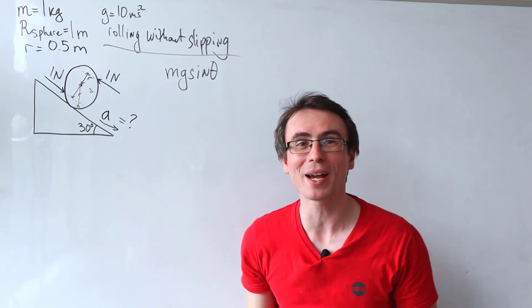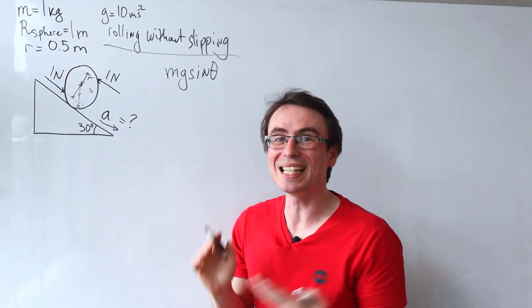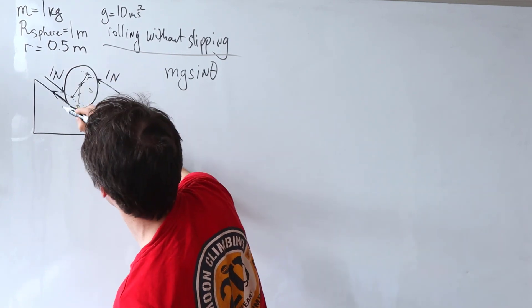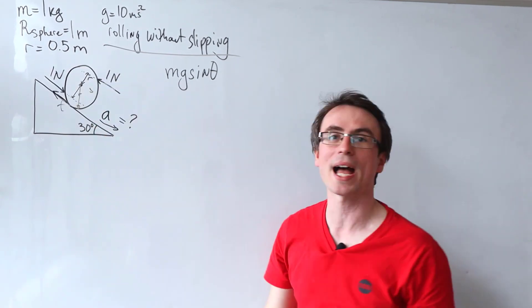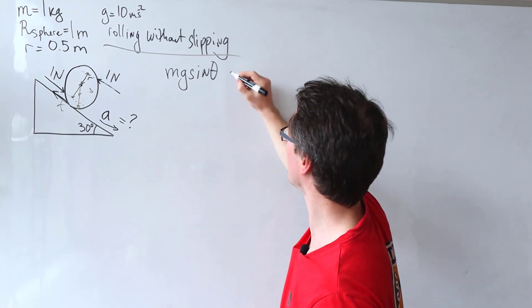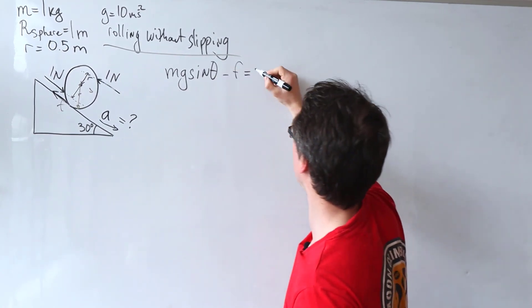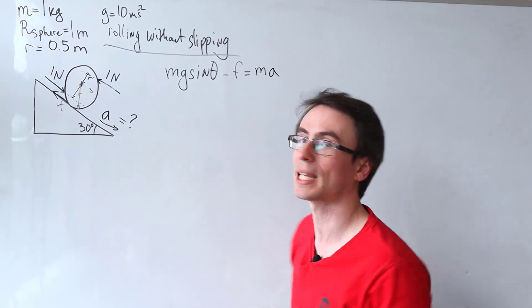So this part of the question is actually a clue that there needs to be a frictional force that is acting along here. I'm going to call that F. So mg sine theta take away F will just be given by M times the acceleration.